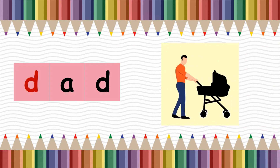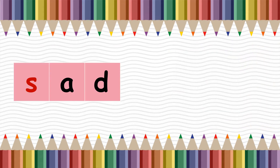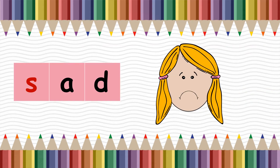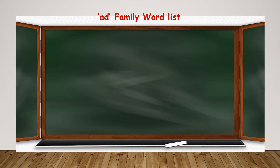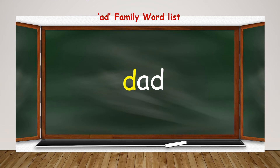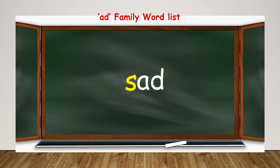Let's try to read the 'ad' family word list: bad, dad, mad, pad, sad. Let's repeat again: bad, dad, mad, pad, sad.